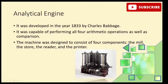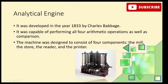The Analytical Engine was developed by Charles Babbage in the year 1833. It is considered the first general-purpose mechanical computer. It could perform all arithmetic calculations including addition, subtraction, multiplication, and division. It had four components: the mill (processing unit), the store (storage unit), the reader (input unit), and the printer (output unit). These components are the essential parts of modern computer systems. However, the engine's construction was never completed due to insufficient funds.